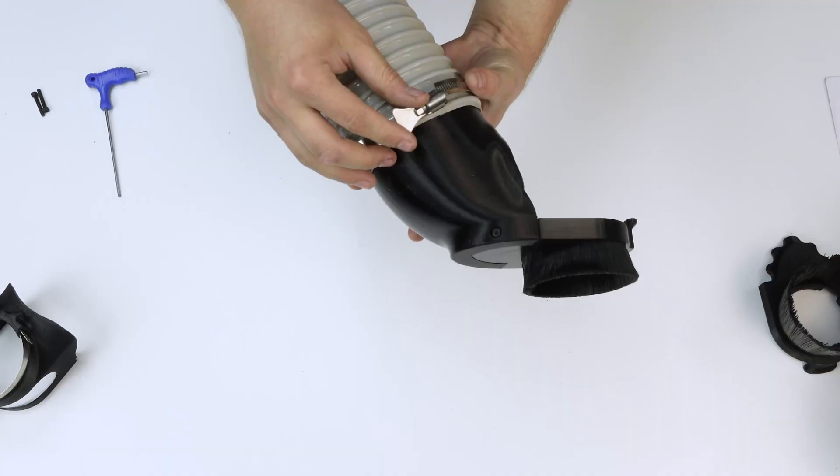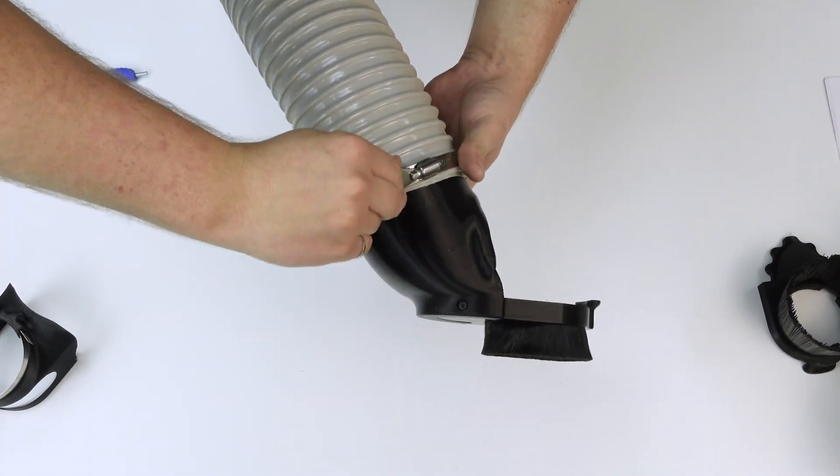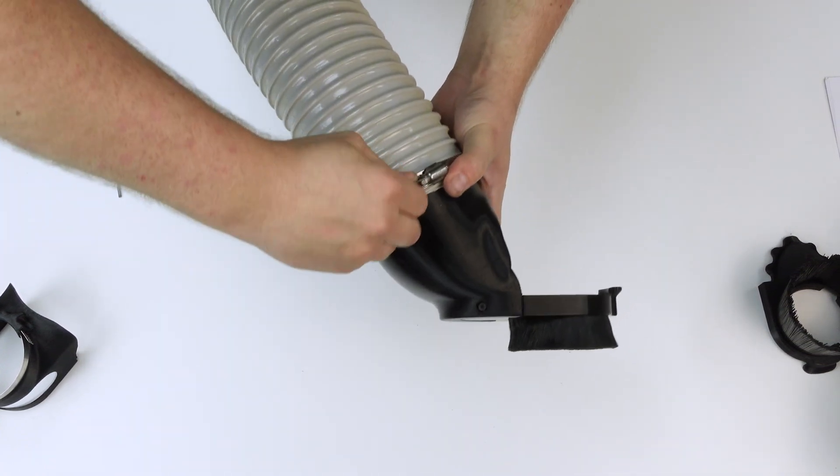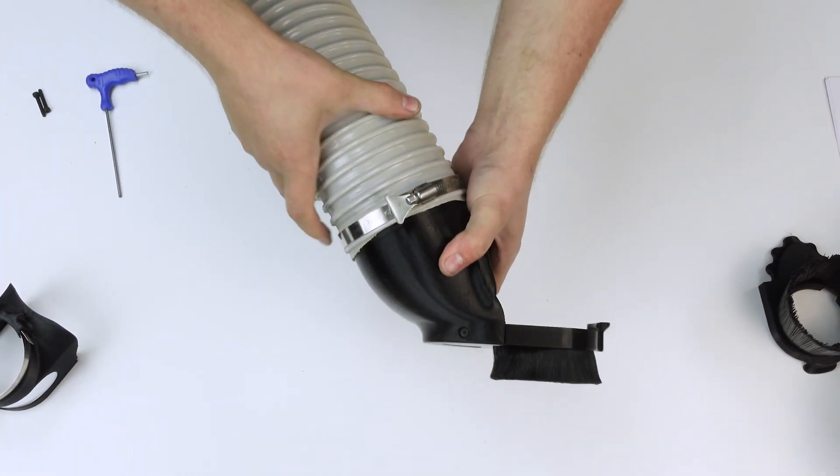So we'll be putting this hose clamp over the end. It doesn't need to be super tight, just enough that it doesn't come off. That's pretty good.